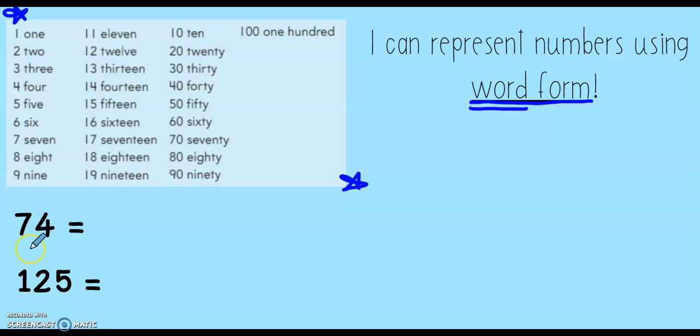So instead of showing 74 with numbers in standard form, I can write 74. I can find them on my chart. There's 70 and 4, and I can use my word form to write it out. Watch how I do that. Seventy. And then in between the tens and the ones, I put a little dash. Four. Seventy-four. Just like that.